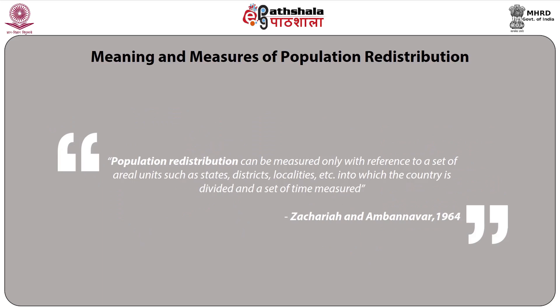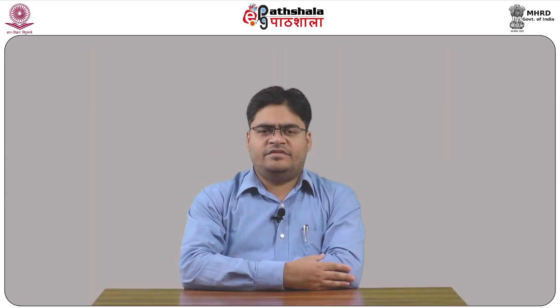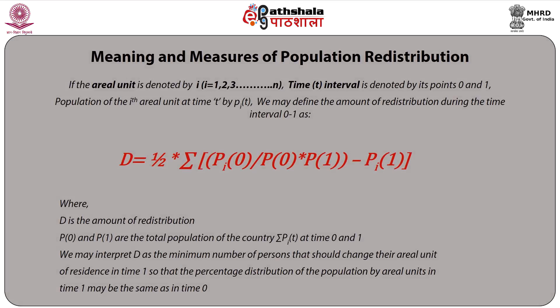Zakaria and Ambanauer in 1964 argued that population redistribution can be measured only with reference to a set of areal units such as states, districts, localities, etc., into which the country is divided, and a set of time measures. If the areal unit is denoted by i, where i = 1, 2, 3, up to n, the time interval is denoted by its points 0 and 1, and the population of the i-th areal unit at time t by pi(t).